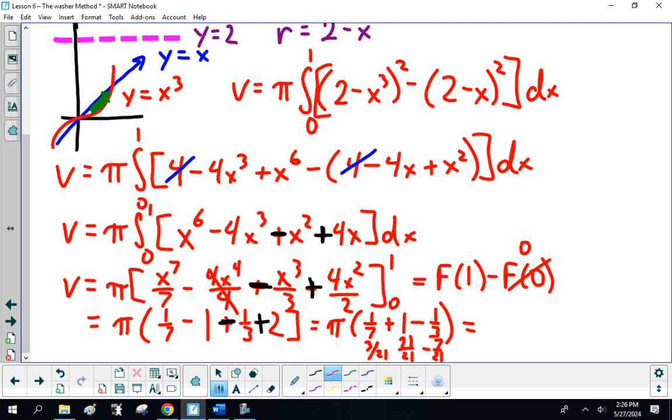So, that is 14, 15, 16, 17... 17π/21, I believe. Now, is it that hard? No, but it's friggin' annoying.